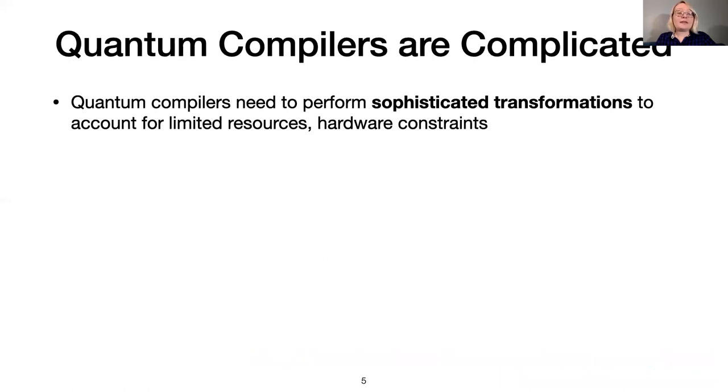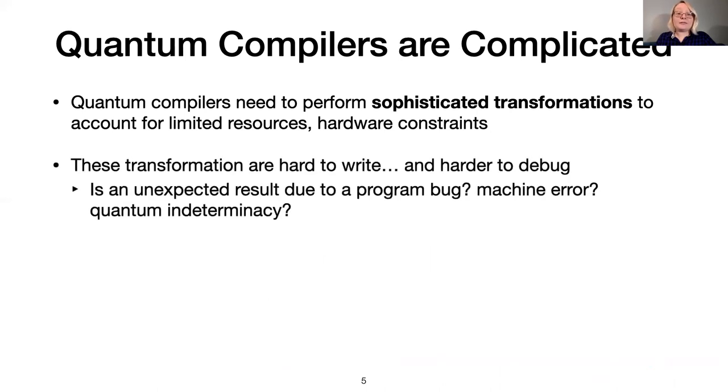So quantum compilers need to take a program that was already difficult to write, and then perform sophisticated optimizations to account for limited resources and hardware constraints. These optimizations are tricky to write, and even harder to debug. An unexpected result when executing a quantum program could be due to a bug in the compiler, or a bug in the program, or a machine error, or the result may be valid, just unlikely, due to the probabilistic nature of quantum programs.